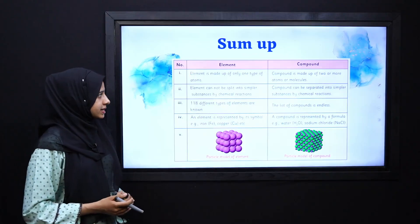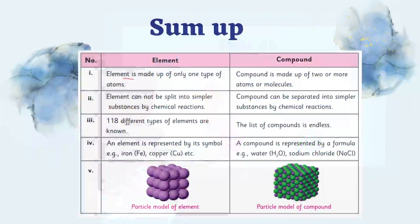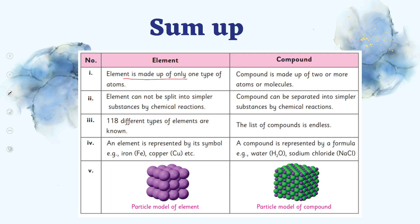So, now we will summarize our lecture. We have learned that elements are only one kind of atoms, whereas compounds are two or more different elements or atoms are made by the compounds.